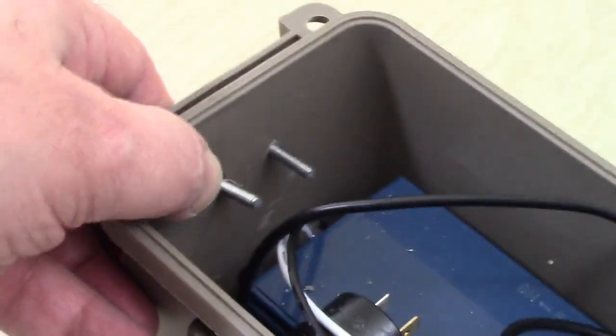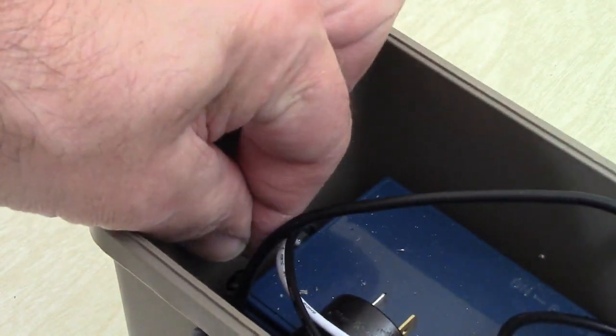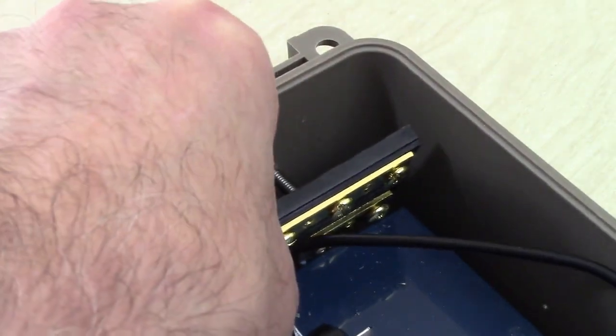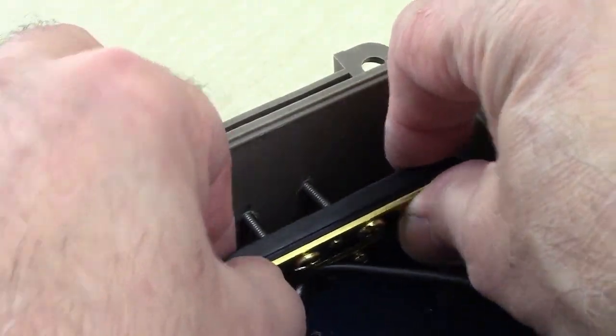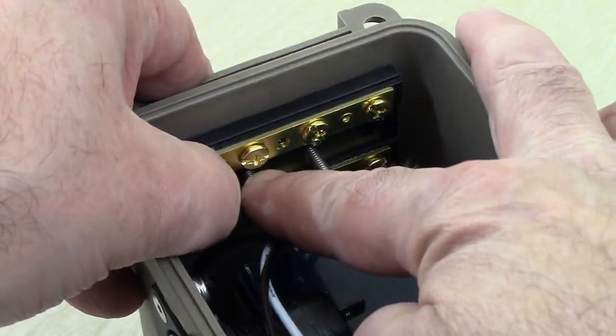Flip it over, and it looks like that. And I'll straighten that one. There we go. And we'll take our negative terminal block.